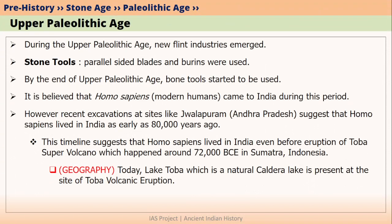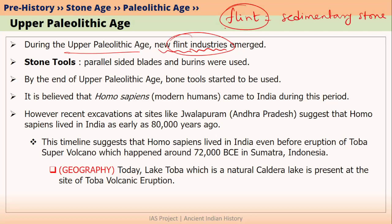We have divided Paleolithic Age into Lower, Middle and Upper based on two factors: the first factor was climate change, and the second factor was tools. The most important development in terms of tools during Upper Paleolithic Age was that new flint industries emerged — that is, places and people who made flint stone tools. Flint stone was not used in Lower or even Middle Paleolithic, making this a new and significant development.